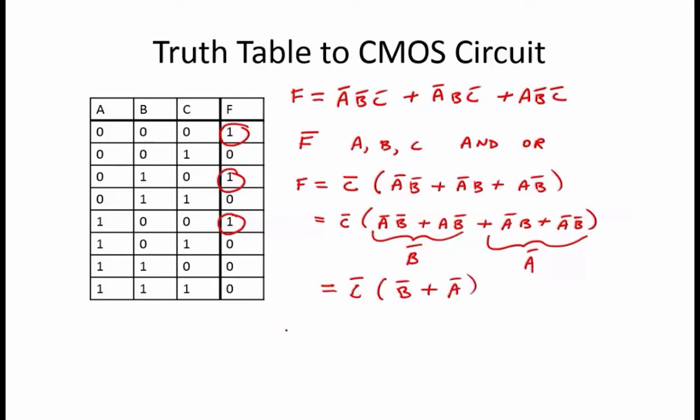We're almost there. We now want to convert F to NOT F by negating the entire thing. So NOT F equals NOT of NOT C anded with NOT B or NOT A.